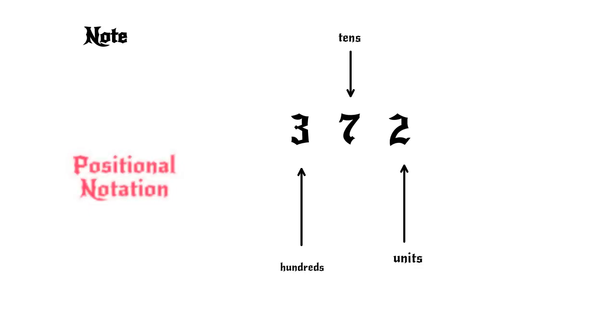Here, the important point is that the meaning of the digit symbols 3, 7, and 2 depends on their position in the units, tens, and hundreds places. This is called the positional representation or positional notation and is widely used in modern mathematics.